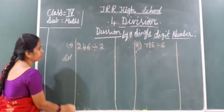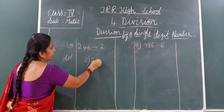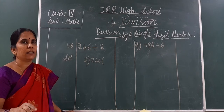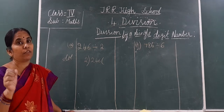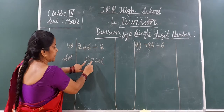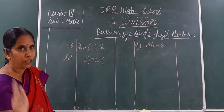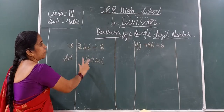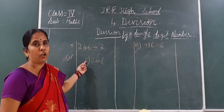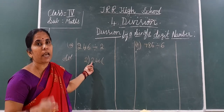Now here, 2 will be written here and 246 will be written here. Now we will write the two tables. First we must see whether we must take single digit or double digit — that is the first important thing. Here we got 2, and here also 2 is there — same number. So if you got the same number, you must take single digit only. If this number is equal to or greater than the divisor, take single digit.